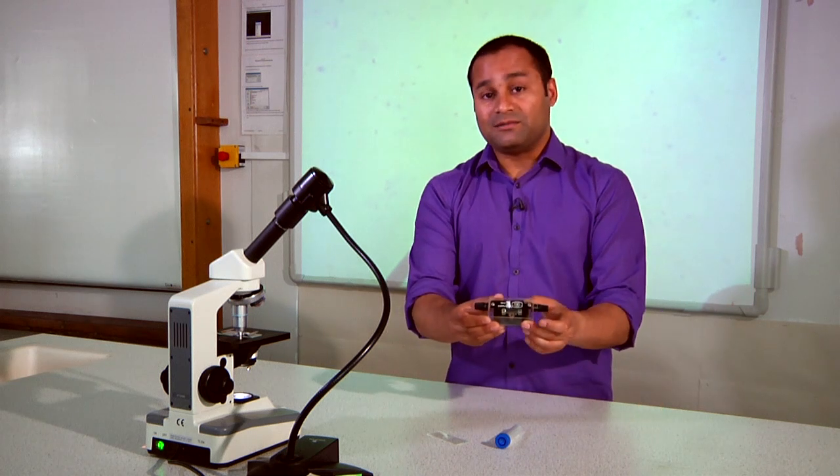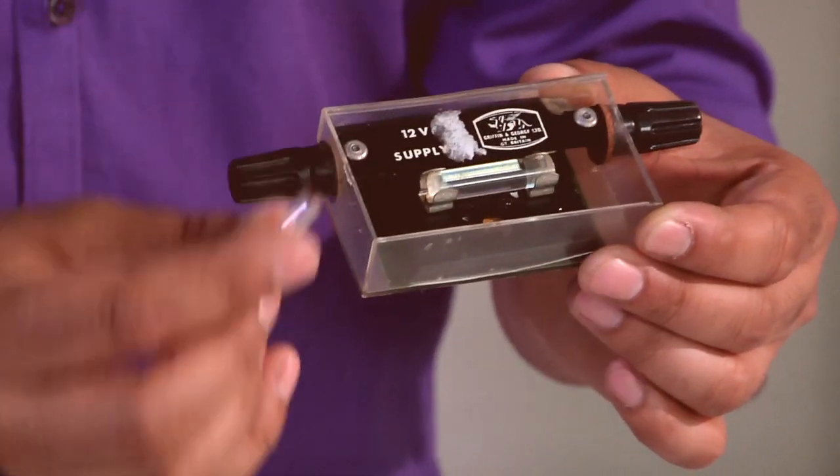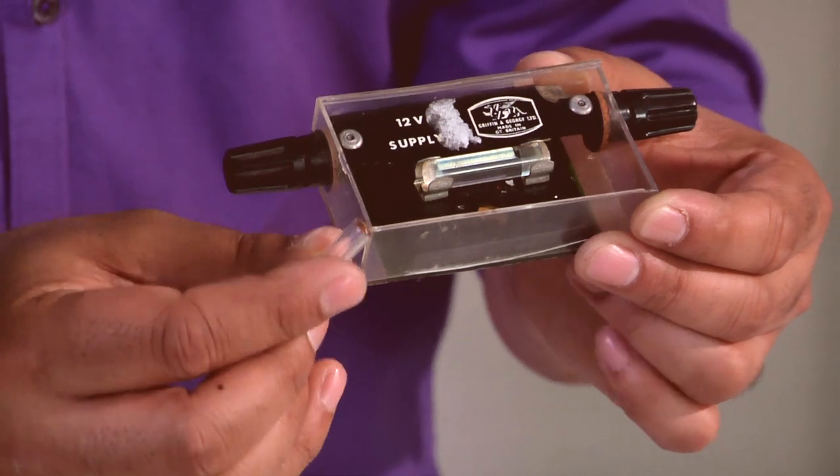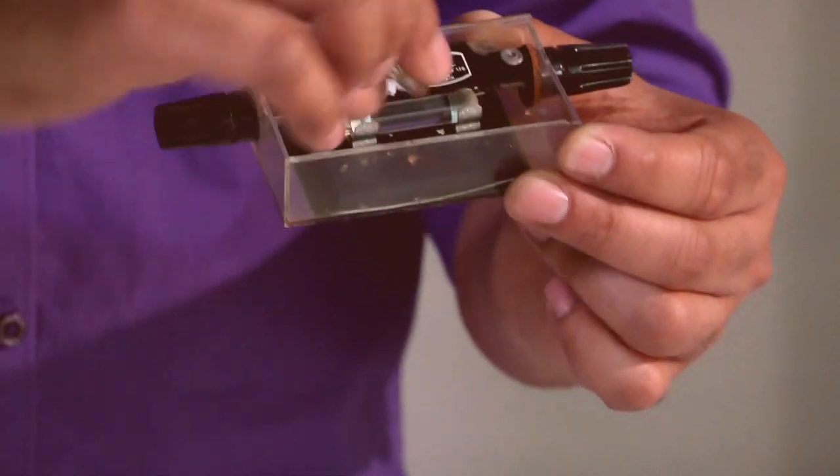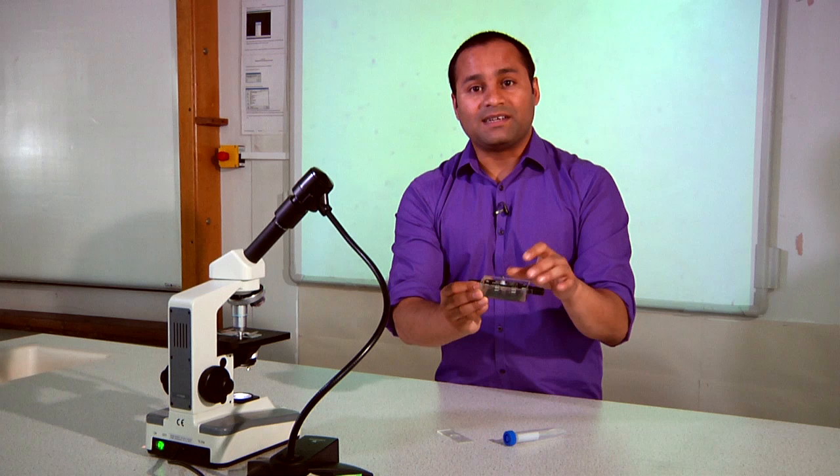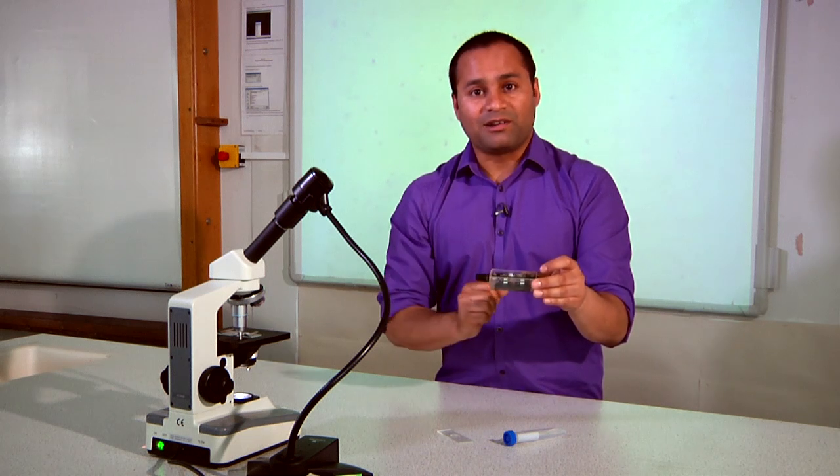It's usually done using one of these, which is called a smoke cell. You fill this tiny capsule with smoke from some burning paper. You take the whole thing and put it under a microscope and what you should see are smoke particles undergoing Brownian motion.